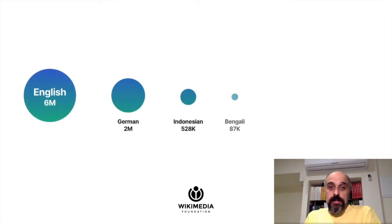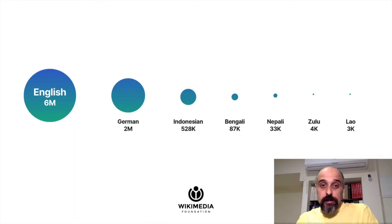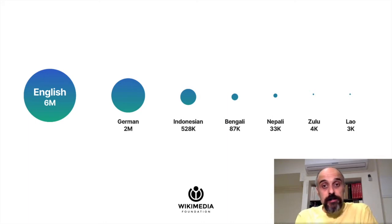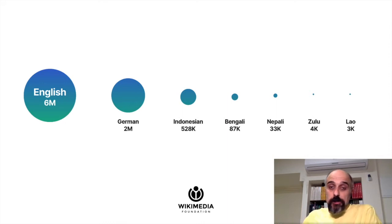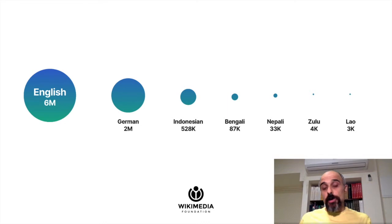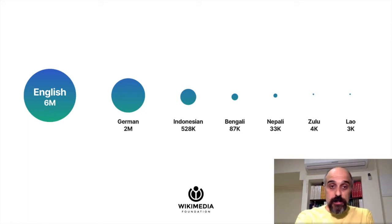If we look at Wikipedias in different languages, we can see the gaps in the amount of knowledge there. English Wikipedia is the largest, with much more than six million articles. German is the second biggest with two million articles. Indonesian, one of the top 10 languages in the world, has a little over half a million articles, even though it has more speakers than German. Bengali, also a top 10 language, has less than 100,000 articles. Nepali, Zulu, and Laos, all spoken by millions, have even fewer articles, and all have active editing communities, but the growth is not as fast as it could and should be.